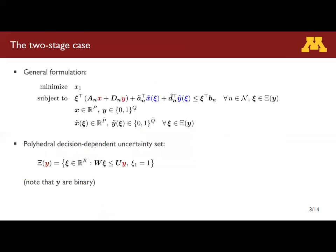First, we focus on the two-stage case before we extend to a multi-stage one. In this general formulation, X and Y are our first-stage continuous and binary decisions, respectively. X-tilde and Y-tilde are second-stage decisions, and they are functions of uncertain parameter C. Without loss of generality, we apply a deterministic objective function, and the constraints have to hold for every realization of C within the uncertainty set. The uncertainty set is formulated as a polyhedron, which depends on the first-stage decision Y. We restrict ourselves to this type of uncertainty set mainly for computational reasons, because this allows us to derive mixed integer linear reformulations. In addition, C1 is fixed to 1 just for notational convenience.